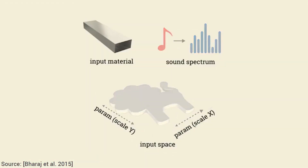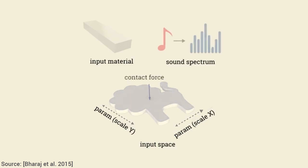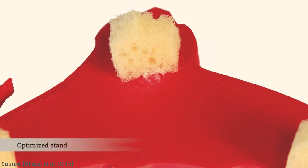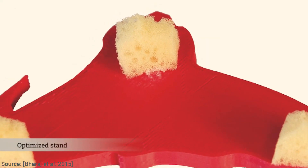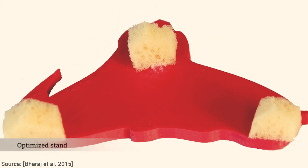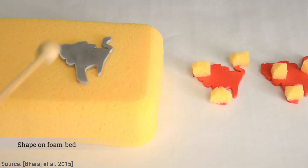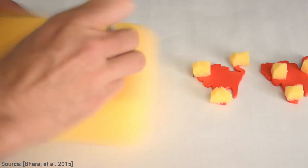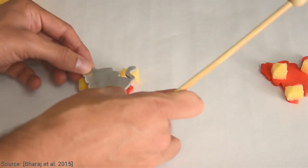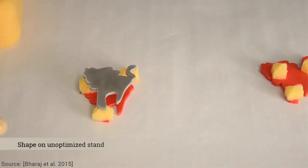The algorithm takes an input material, a target shape, a location where we'd like to strike it, and a frequency spectrum that describes the characteristics of the sound we are looking for. Furthermore, the algorithm also has to optimize how exactly the stand of the piece looks like to make sure that no valuable frequencies are dampened. Here's an example to show how impactful the design of this stand is, and how beautiful and sustained the sound is if it is well optimized.